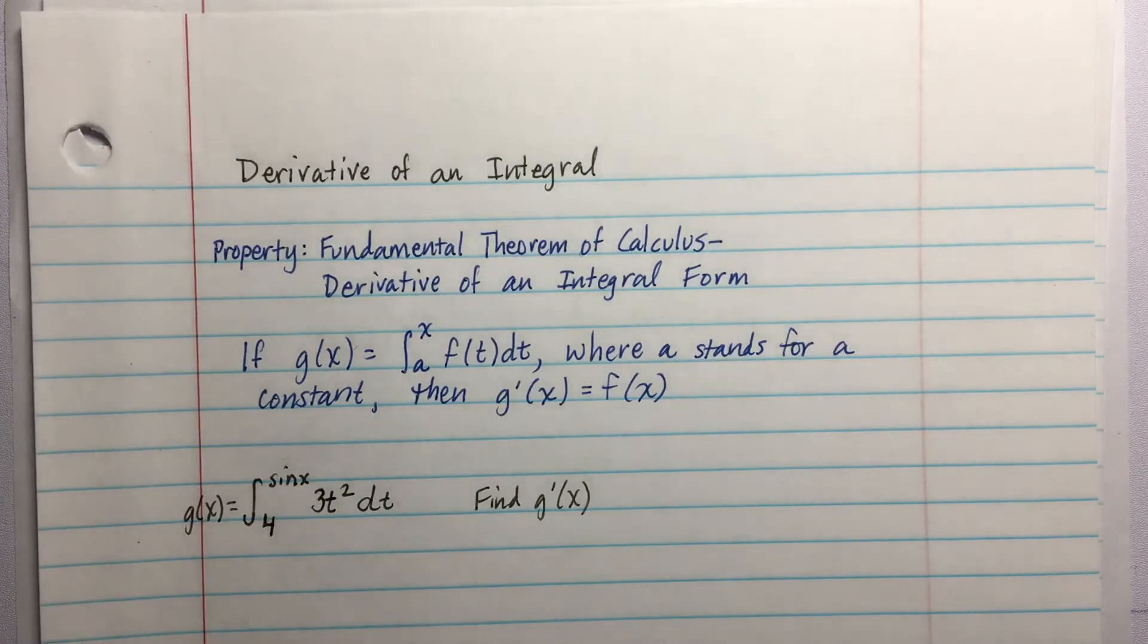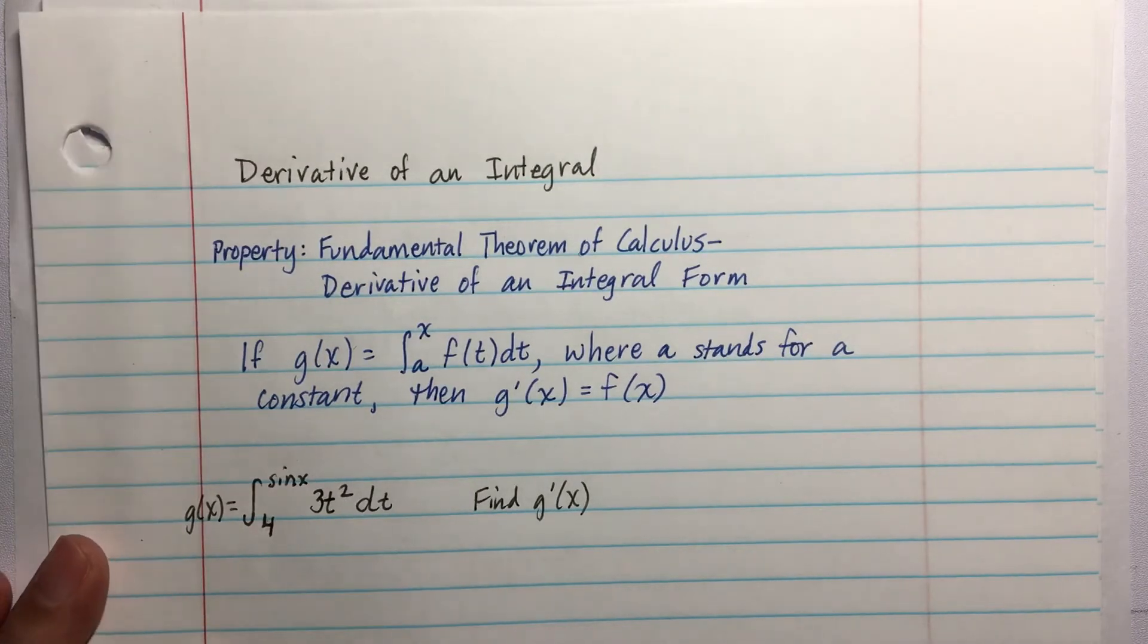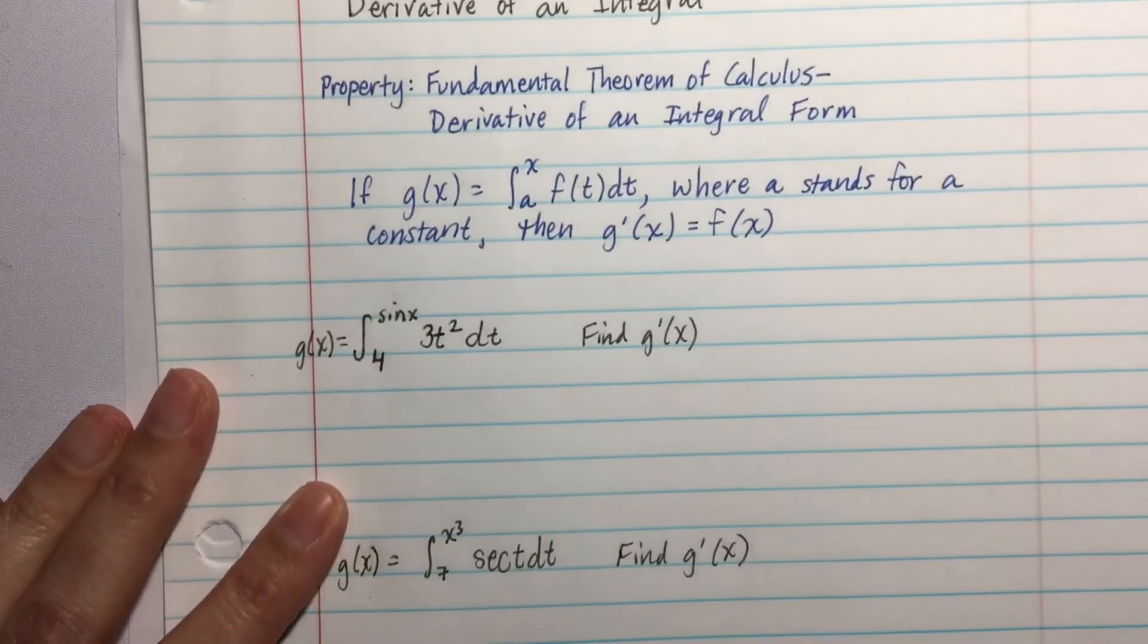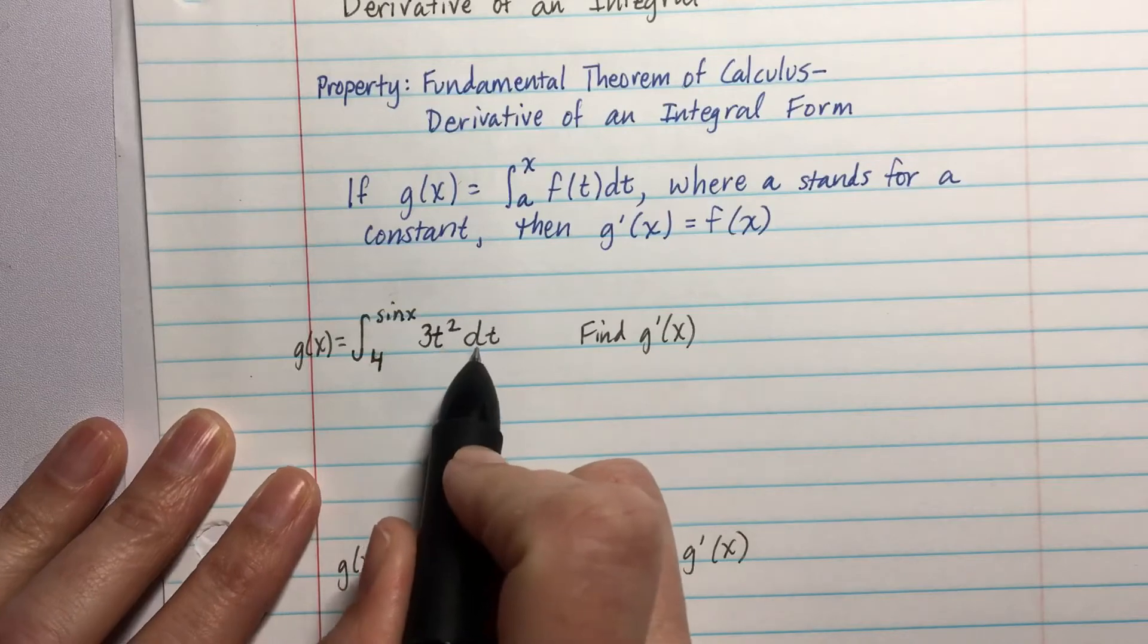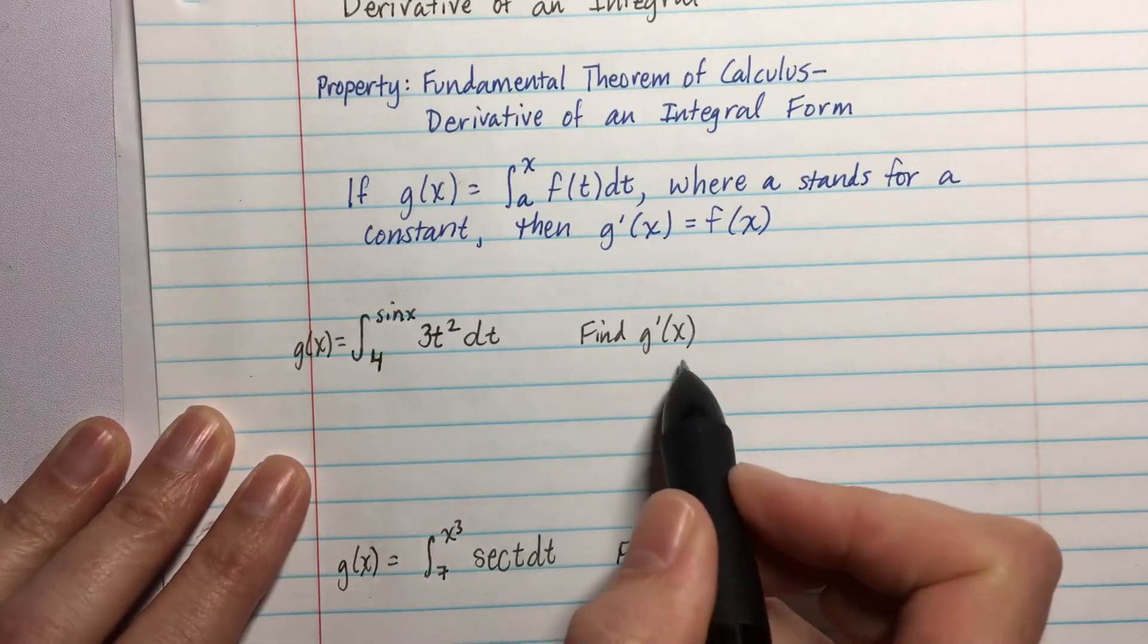And you're probably looking at that going, huh? Let's just take a look at this in action. Let's say we have g(x) equals the integral from 4 to sin(x) of 3t² dt, and we're going to find g'(x).